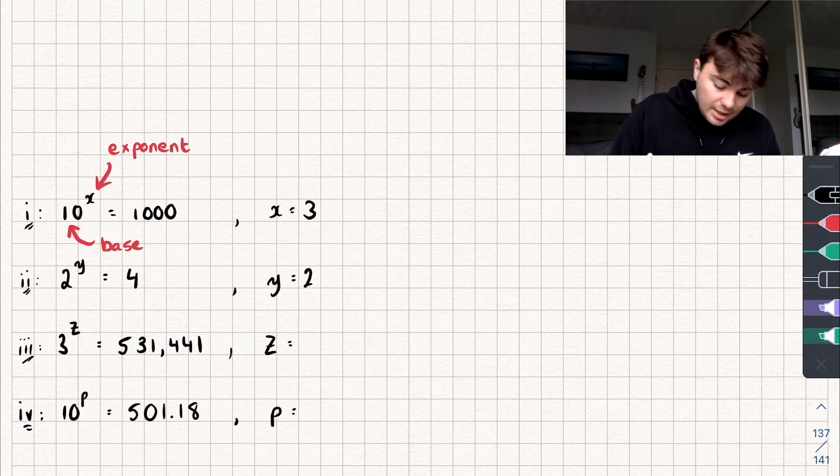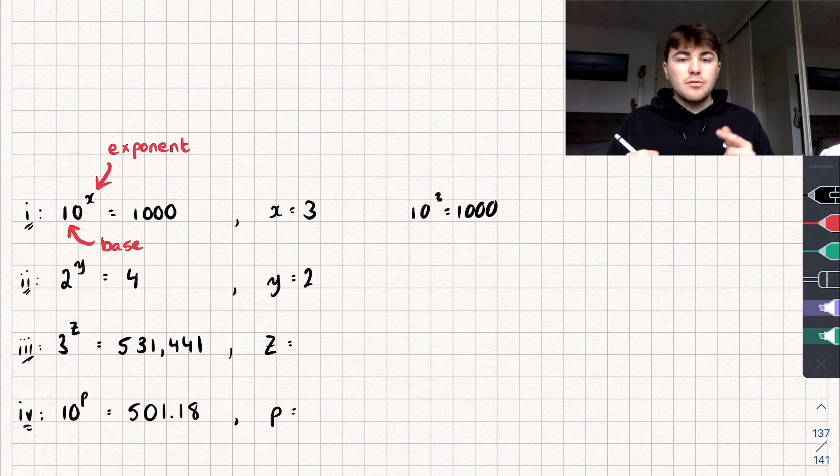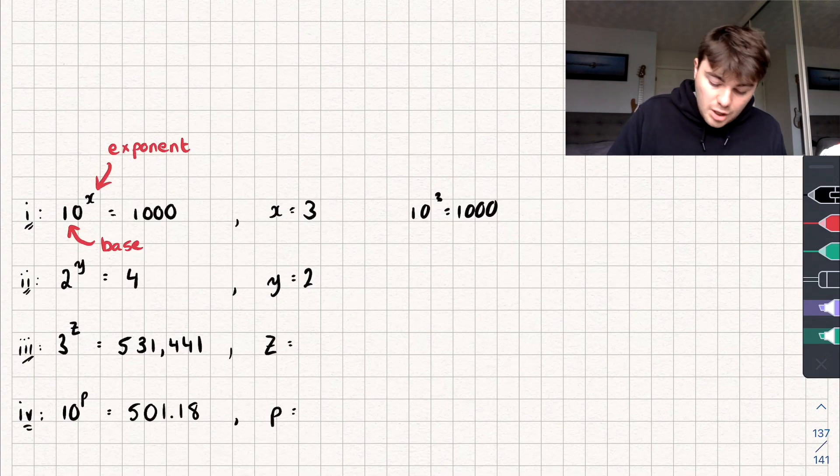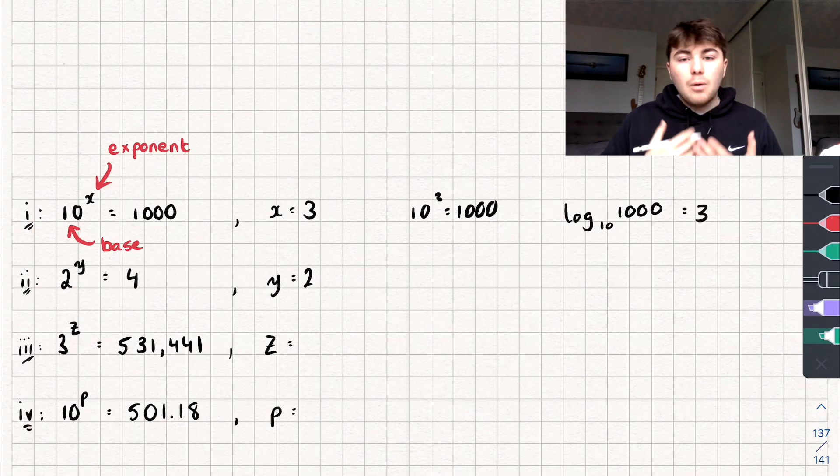First example, we've got 10 to the power of 3 equals 1000. We could write this in an alternative way using logarithms. I'm going to write it out and then I'll explain what it means. We could write it as the log of 1000 base 10 is equal to 3.